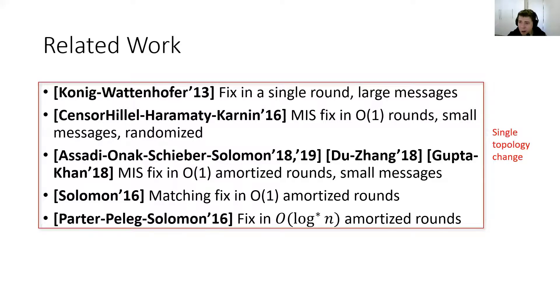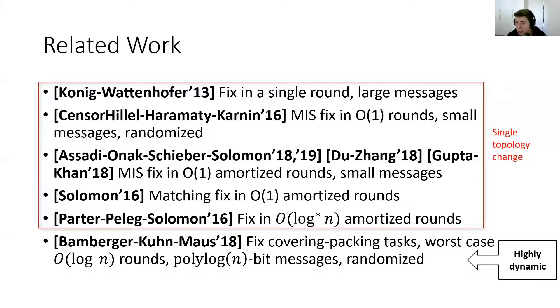This can be seen as an improvement to the work of Censor-Hillel, Haramaty and Keren by virtue of the algorithm being deterministic. We no longer need to assume an oblivious adversary which is not aware of the randomness of the nodes. Also, Solomon in 2016 showed how to fix matching in O of 1 amortized rounds, and Barenboim, Peleg, Solomon in 2016 showed how to fix various tasks in O of 1 amortized rounds. What's common between all these works is that they assume that only a single topology change occurs at a time. In this work we study the highly dynamic setting and actually the only previous work we are aware of which also deals with the highly dynamic setting is the work of Bamberger, Cohn and Maus from 2018, who show how to fix various covering and packing tasks with worst case O of log n round complexity using polylog n bit messages and the algorithms are randomized.